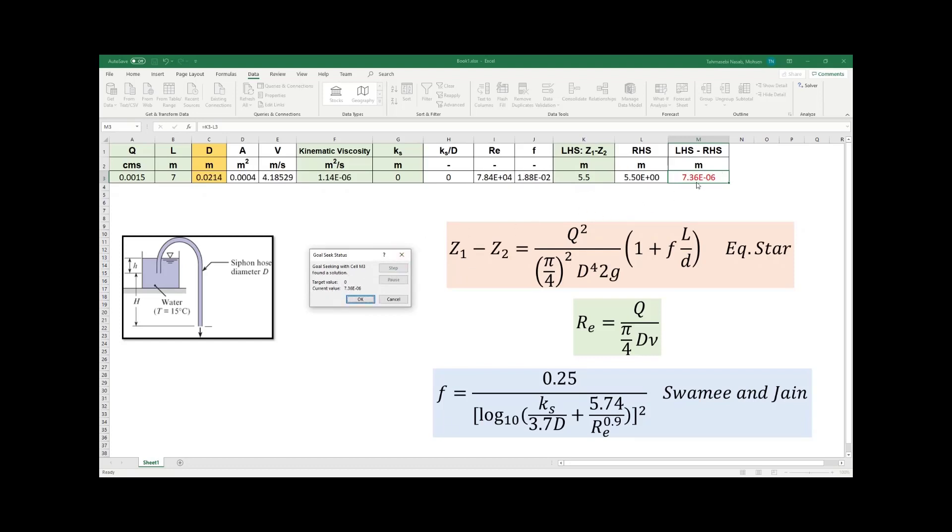It will find a number very close to 0. Look at this number - 7.3 times 10 to the power negative 6, very small. Now take a look at left-hand side and right-hand side - they are basically the same thing. You will see that your diameter, the design diameter, is equal to 0.0214 meters. Instead of doing this trial and error by yourself, you let the computer do this for you. This is a design problem and how you can solve it using a spreadsheet and Swamy and Jain formula.